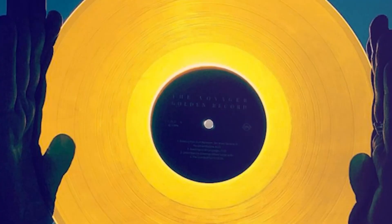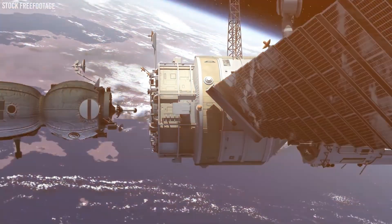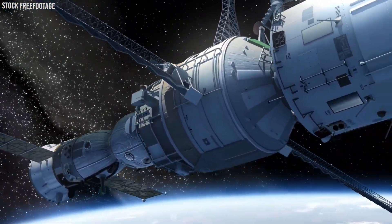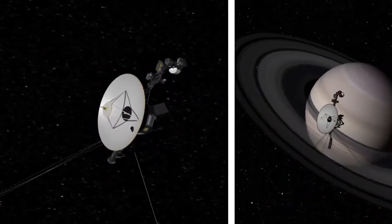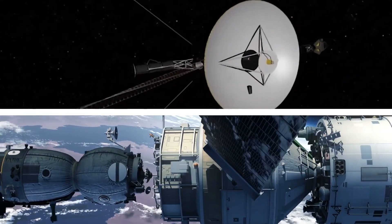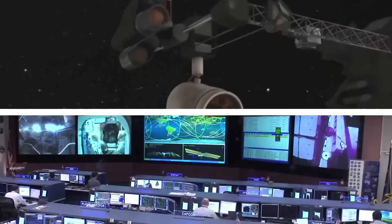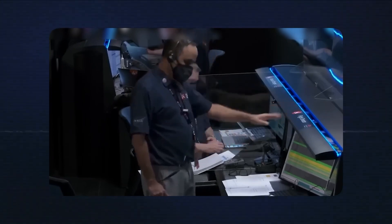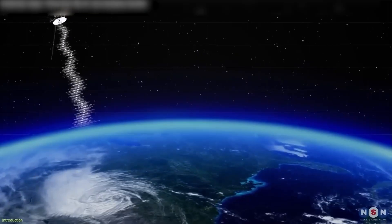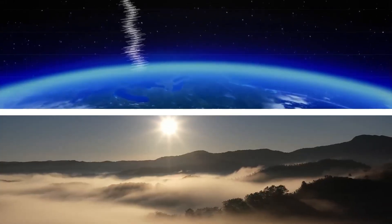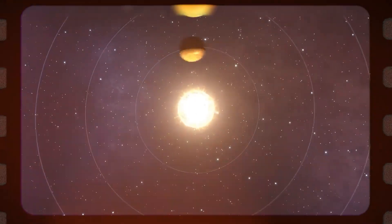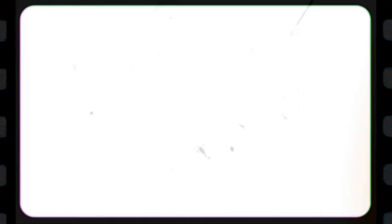After Jupiter, Voyager 1 raced towards Saturn, reaching the ringed planet in November 1980. Again, what had seemed simple from Earth became gloriously complex up close. Saturn's rings, which look like solid bands from Earth, broke down into thousands of individual ringlets, some braided, some with strange spokes, all moving and changing like a cosmic dance. Saturn's largest moon Titan particularly interested scientists because it was the only moon in our solar system with a substantial atmosphere. Voyager couldn't see through Titan's orange haze, but measured its atmosphere and found it was mostly nitrogen, just like Earth's.